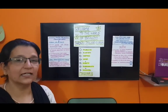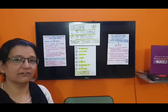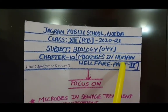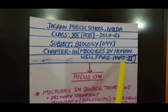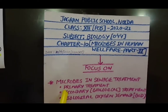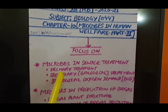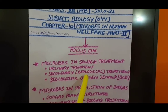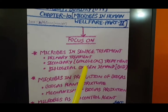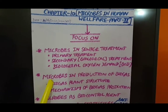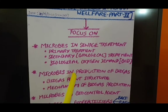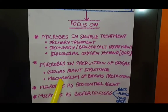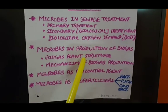Hello students, welcome to the world of biology through Jaguar Classes. In today's class, I will continue with Chapter 10, Microbes in Human Welfare, Part 2, in which I will focus on microbes in sewage treatment — covering the primary treatment process, secondary or biological treatment process, and biological oxygen demand. In the next part, we will see microbes in production of biogas, including the biogas plant structure and mechanism of biogas production.